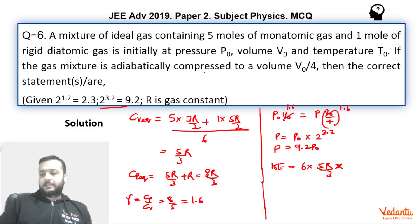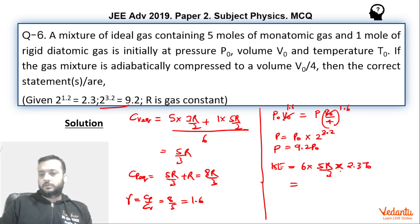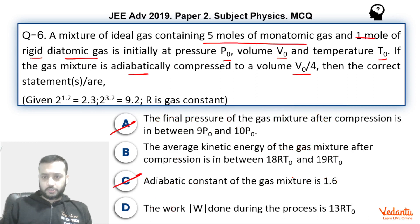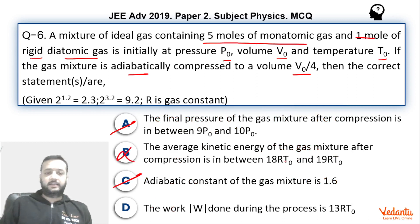So temperature becomes 2.3 T0. Kinetic energy = n × Cv × T = 6 × (5R/3) × 2.3T0 = 23RT0. This is not the right option because the option says it's between 18 and 19 RT0 — so this option is incorrect.